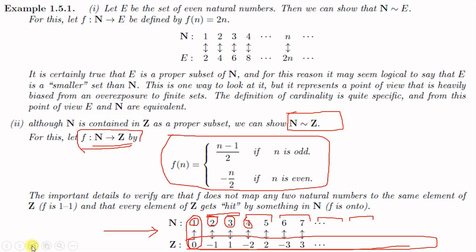As a recap: two infinite sets A and B have the same cardinality if there exists a function f from A to B which is both one-to-one and onto.